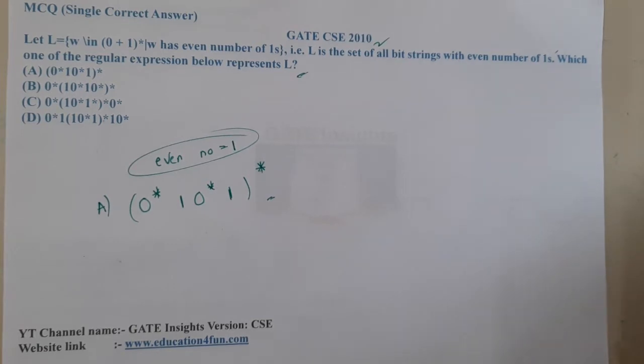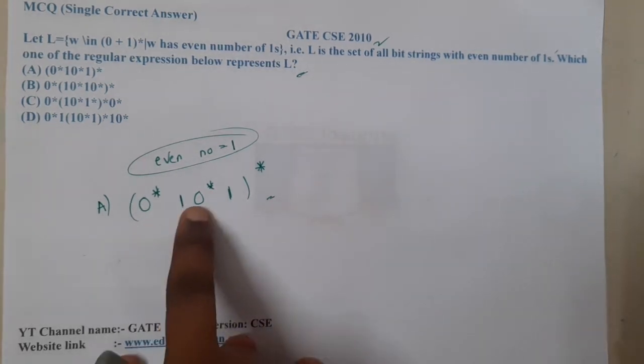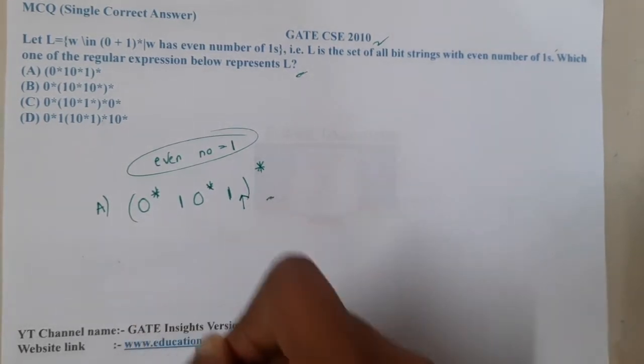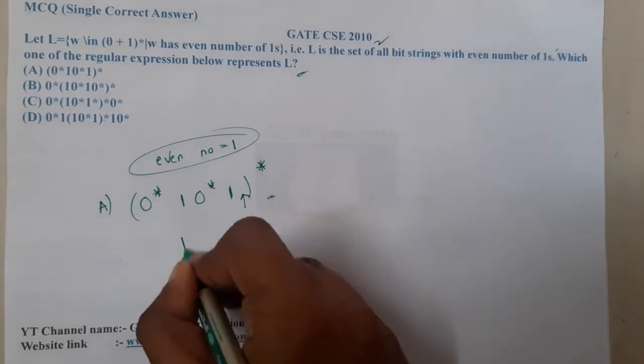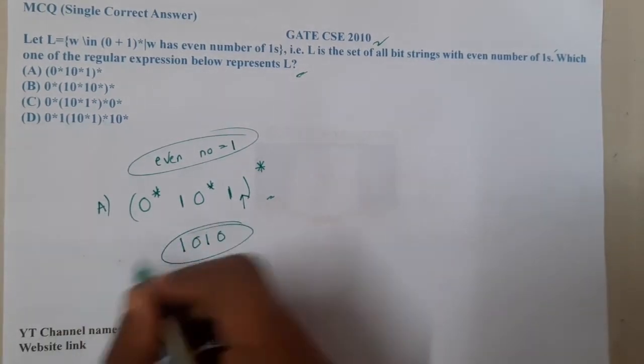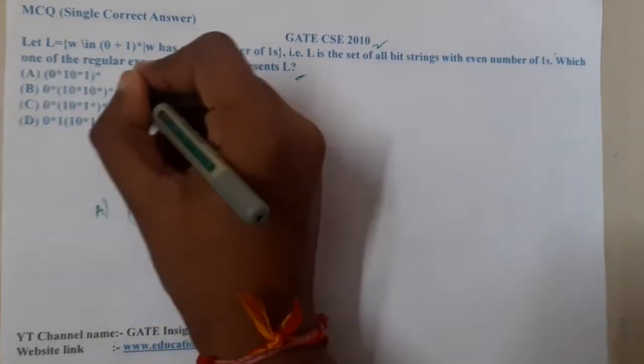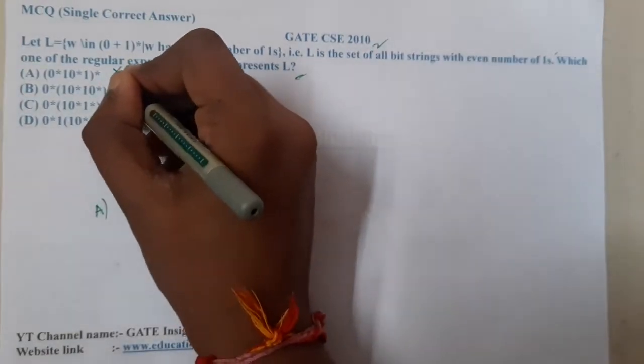But the disadvantage here is the examiner missed one thing. He kept everywhere 0* but why didn't he keep it here? If my requirement is to generate 1010, can I generate it? The answer is no, I cannot generate this string using it, so that option is absolutely wrong.